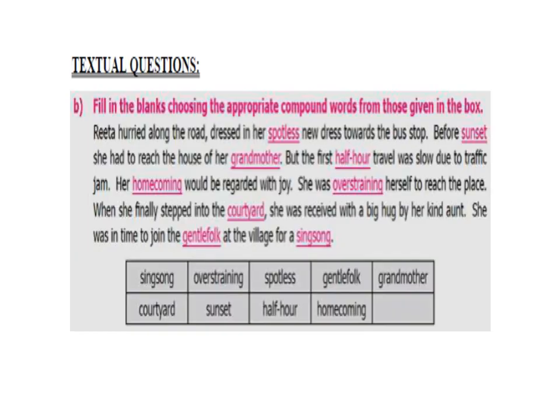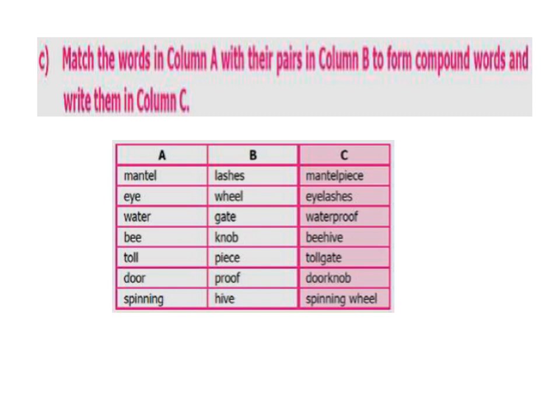This is the textual exercise: fill in the blanks choosing the appropriate compound words from the box. Rita hurried along the road dressed in her spotless new dress towards the bus stop. Before sunset she had to reach the house of her grandmother, but the first half-hour travel was slow due to traffic jam. Her homecoming would be regarded with joy; she was overstraining herself to reach the place.